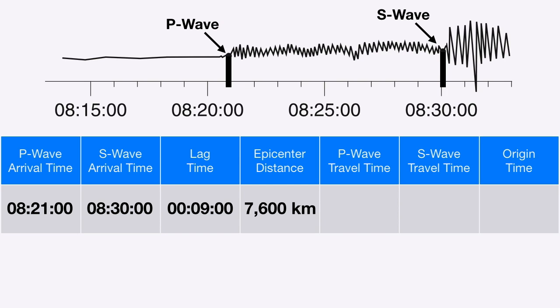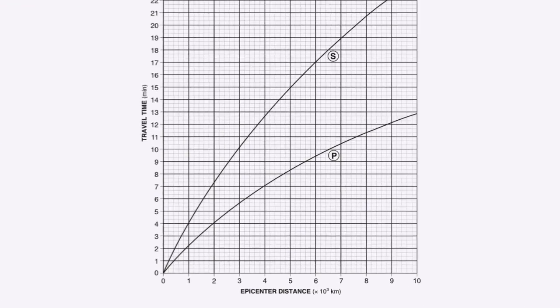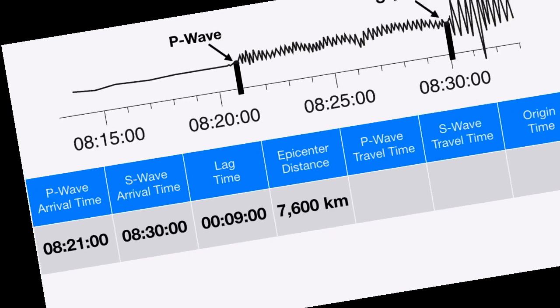The travel time tells me how many minutes a P wave or S wave traveled from the earthquake to arrive to me — in other words, how long it takes a P wave to go 7,600 kilometers. We go back to our chart, find 7,600 on the bottom, go up until we hit the P curve, then head left. We can see that it takes a P wave about 11 minutes to travel 7,600 kilometers, so I'll add that to my chart.